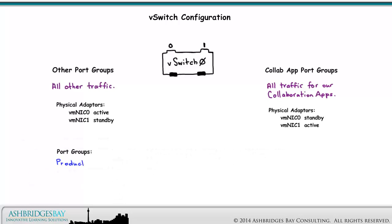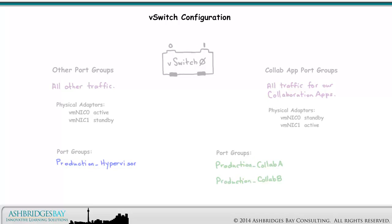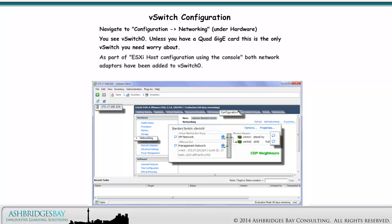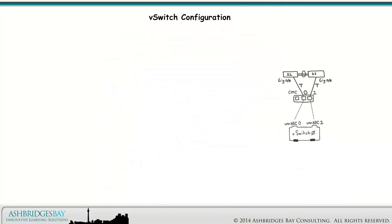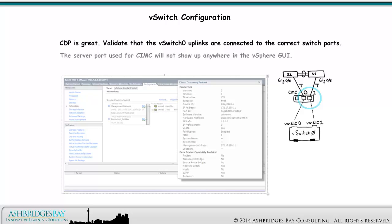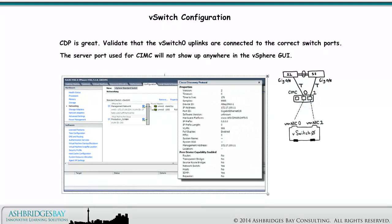We'll rename the VM kernel port group to Production Hypervisor, which will be on the Production Hypervisor VLAN. We need port groups defined for the Production Collab A and Production Collab B VLANs. With your host selected in Inventory, navigate to Configuration > Networking under Hardware. You see vSwitch 0 — unless you have a Quad Gig eCard, this is the only vSwitch you need. Both network adapters have been added to vSwitch 0 as part of ESXi host console configuration. Click on the indicated icons to see the CDP neighbor information. Validate that vSwitch 0 uplinks are connected to the correct switch ports. The server port used for SIMC will not show up anywhere in the vSphere GUI.